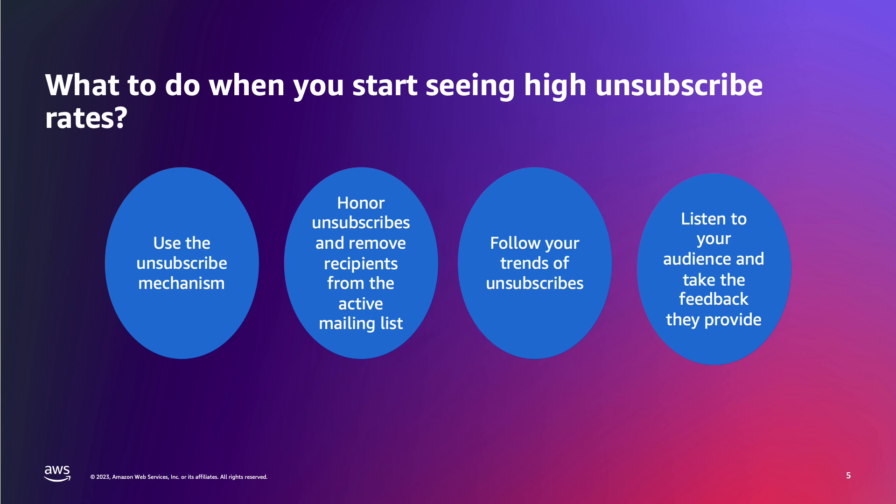So, what to do when you start seeing high unsubscribe rates? Senders should use the unsubscribe mechanism as both a way to honor opt-out requests and as a signal to improve the recipient experience, whether unsubscribe spikes are overall or specific to a channel. The rate of unsubscribes can vary depending on the market you are in, but it should stay relatively consistent over the long term. Honoring unsubscribes by removing recipients from the active mailing list or preference center is an important part of long-term list maintenance. Following your trends of unsubscribes from the holistic account sending overview all the way down to individual campaigns is a way to keep from getting into a high volume spike of unsubscribes.